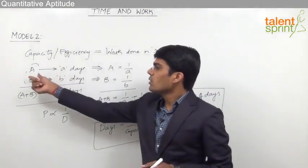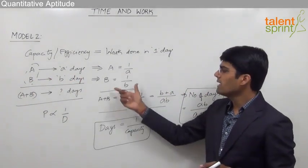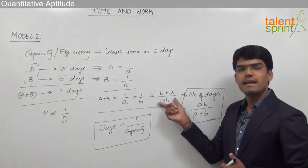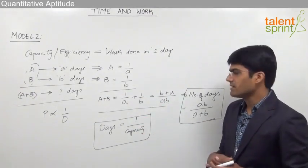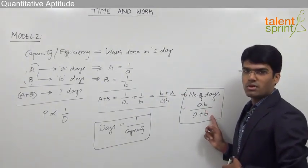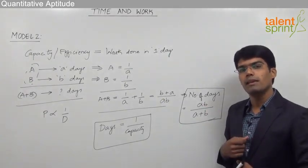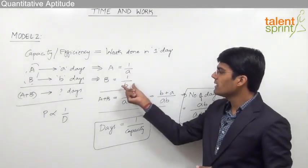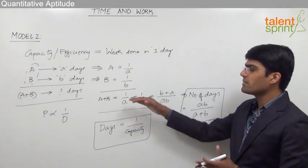So the shortcut formula is: if A can finish work in A days and B in B days, the total days required when both work together equals AB/(A+B). You can either use this direct formula or find the one day's work and reciprocate it to get the number of days — both approaches give the same answer.